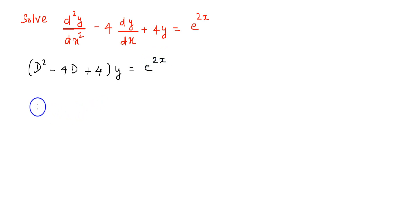Now we need to find the value of y. y will always be the sum of complementary function plus particular integral. Let us find the complementary function. For that, we have to find the auxiliary equation of D² - 4D + 4 = e^(2x).